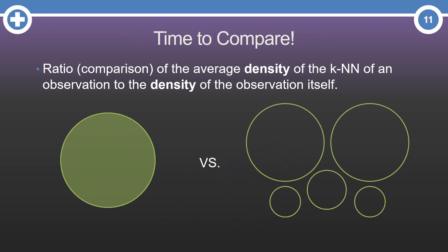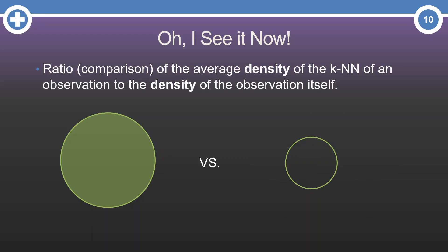Now, we compare. We have the density on the left from our observation of interest. On the right, we have the densities from the five nearest neighbors. We need to average those densities on the right-hand side. Imagine a circle that is the average size of all those. Something like this.